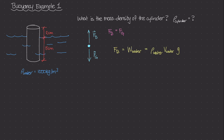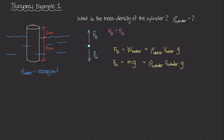What about F sub G, the weight of the actual cylinder itself? That is equal to the mass of the cylinder times gravity — which is the mass density of the cylinder times the volume of the cylinder times the gravitational constant. An important distinction: in the buoyant force equation, the volume is the amount of displaced water, not the entire cylinder. Whereas F sub G uses the volume of the entire object, because the entire object contributes to its weight.